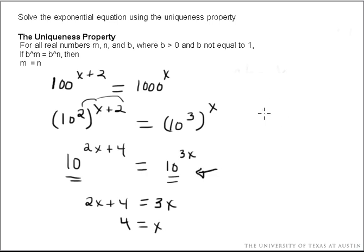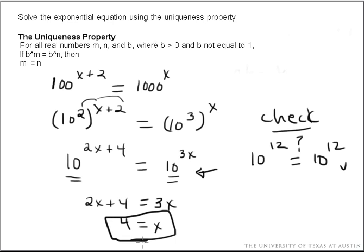Let's go back in here and check to see if it worked out. It's always a good idea to check your work whenever you can. So the left, if I plug in 4, I get 10 to the 2 times 4, or 8 plus 4, which is 12. And does that equal 10 to the 3 times 4, which is also 12? It does indeed. So x equals 4 is our solution.